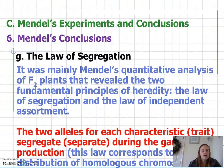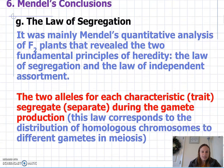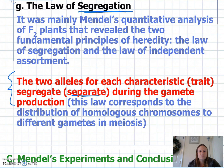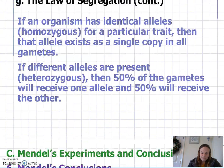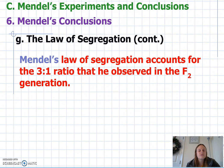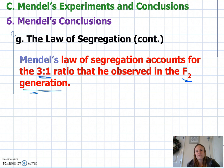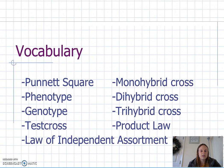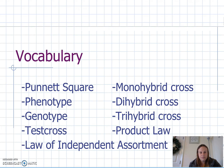Mendel therefore developed the law of segregation, where he said that two alleles for each characteristic or trait segregate — meaning separate — during gamete production. This law corresponds to what we learned in meiosis regarding the distribution of homologous chromosomes to different gametes. Mendel's law of segregation accounts for that three-to-one ratio observed in the F2 generation, with three dominant traits expressed versus one recessive trait. Next time we'll get into Punnett squares, crosses, and terms like phenotype and genotype. For now, let's end with the law of segregation.